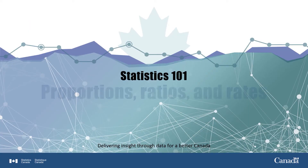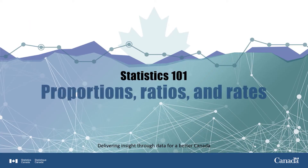Often, the easiest way to tell a data story is to simply compare one given number with another. When we hear 75% of people think this, or two-thirds of companies do that, what we are hearing are the results of analyzing a given set of data. And three helpful measures for doing so are proportions, ratios, and rates.